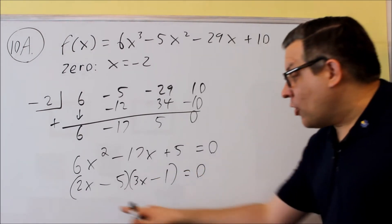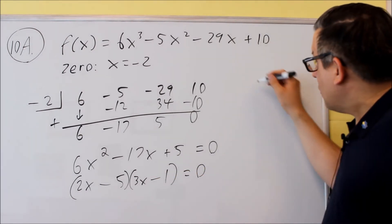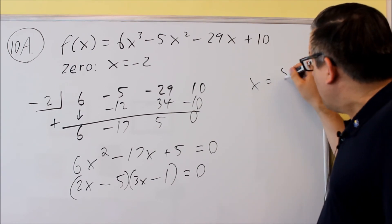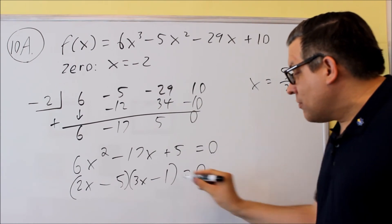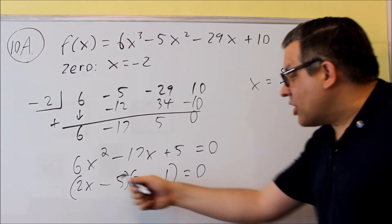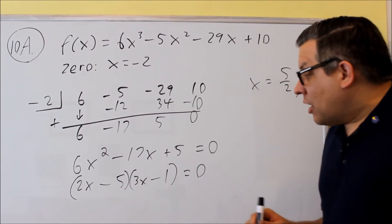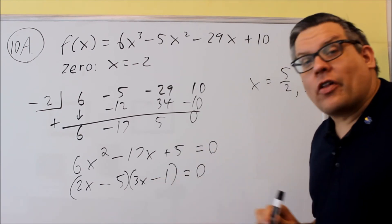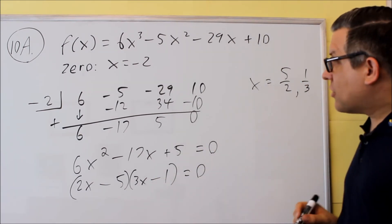The last thing you're going to do is set both of these individually equal to 0 and your two answers will be 5 halves and 1 third. By setting both equal to 0, adding the 1 or 5 and dividing by the number in front of the x, that will be your final answer.